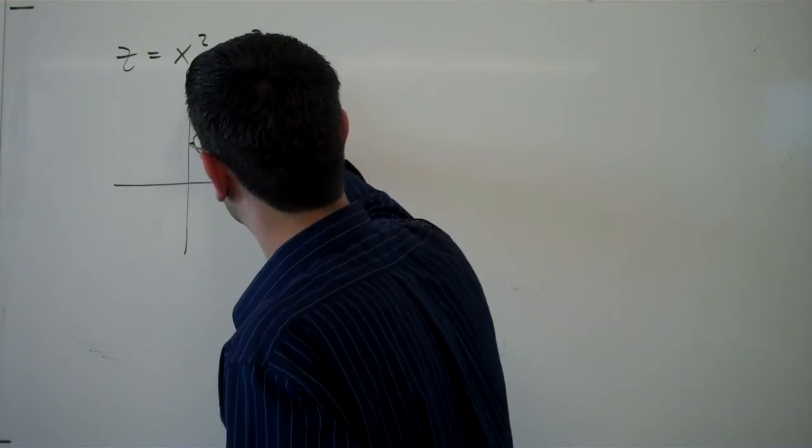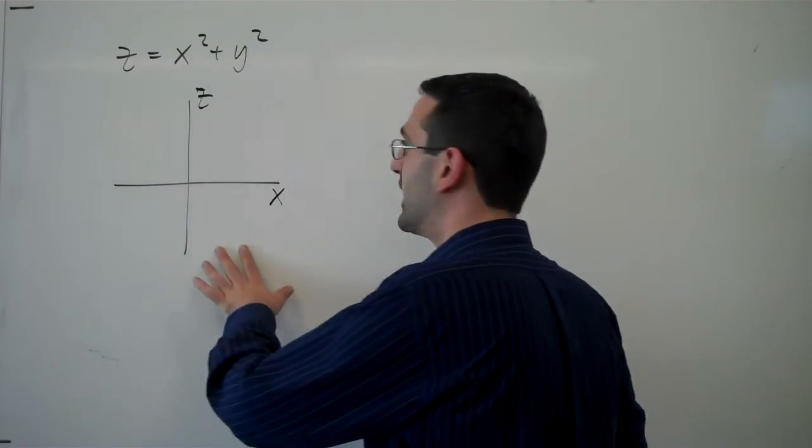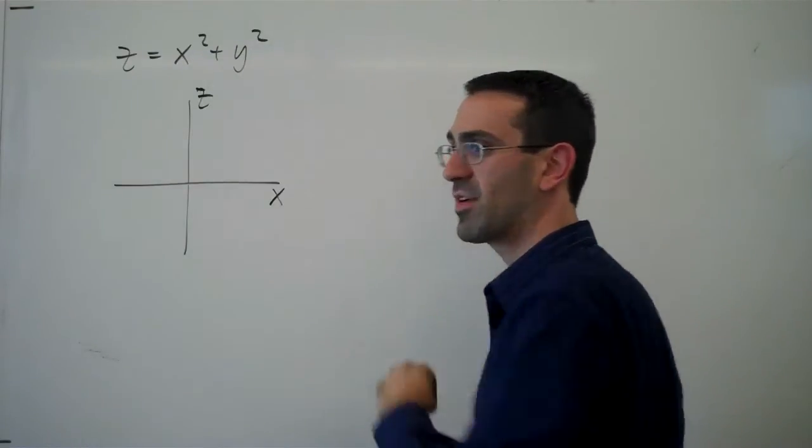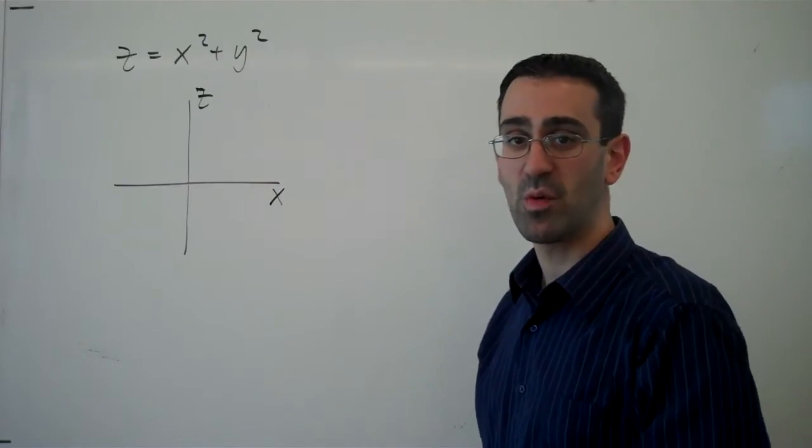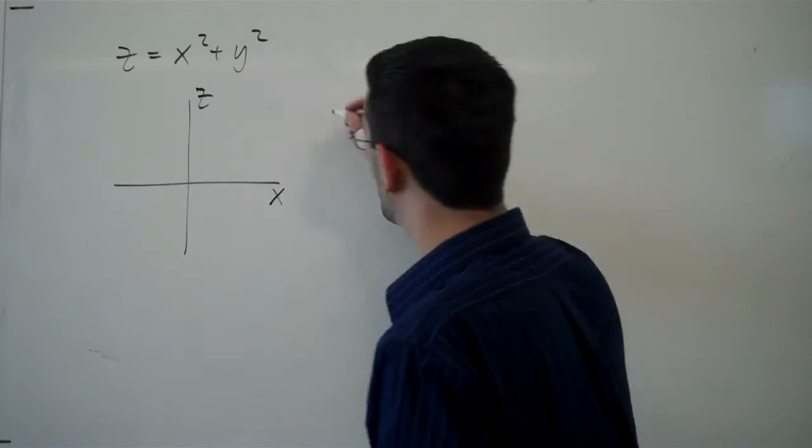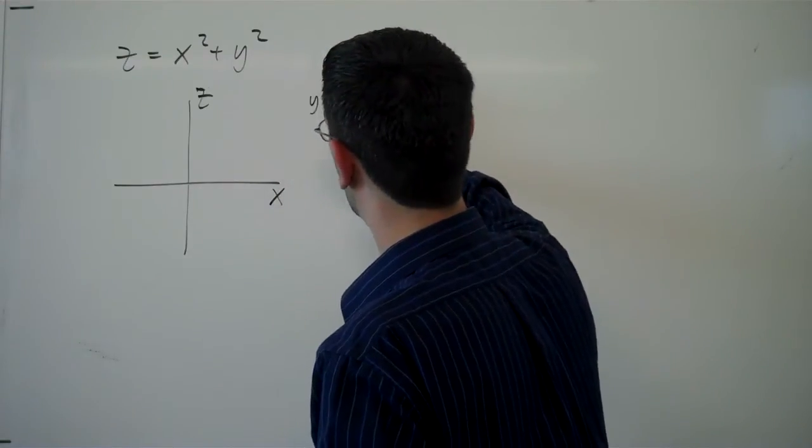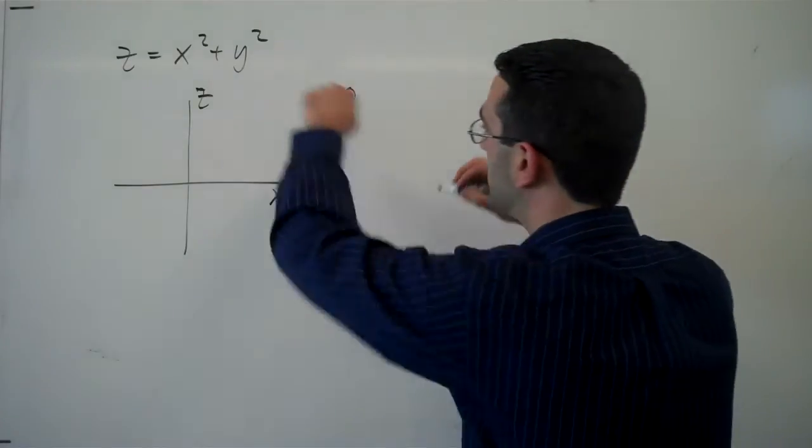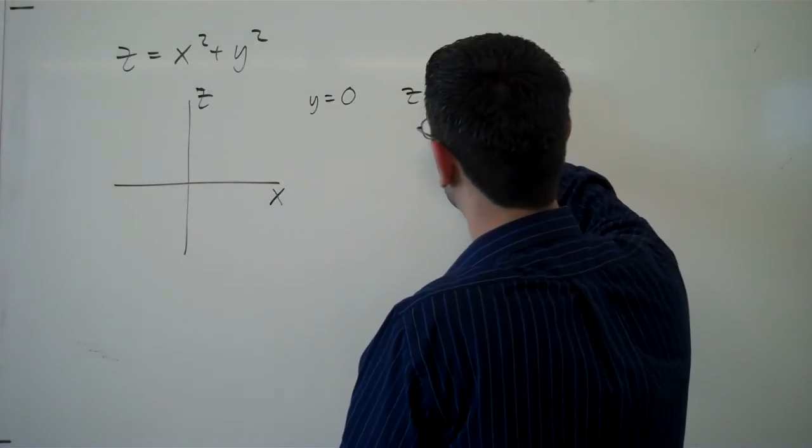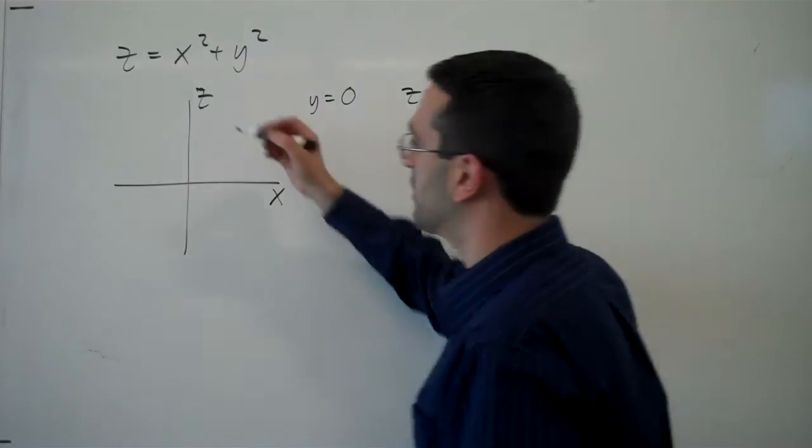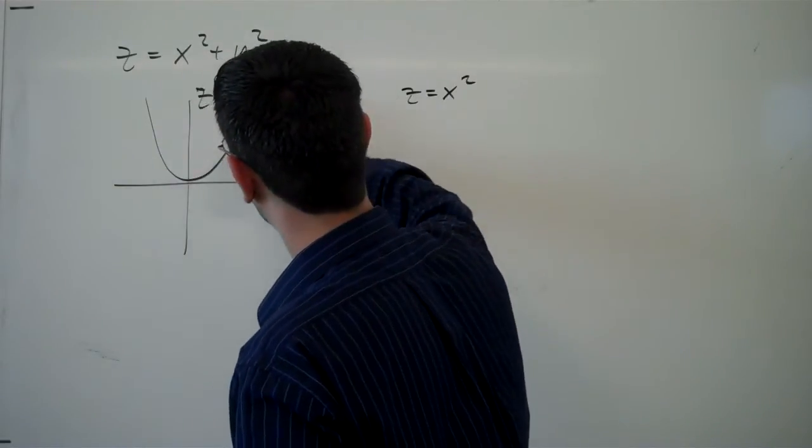So let's start with the x and z plane. And so to look at the graph in this direction, we're going to have to let y equal a constant. So if y was equal to, say, 0, then this equation would reduce down to z equals x squared, which would be a nice simple parabola.